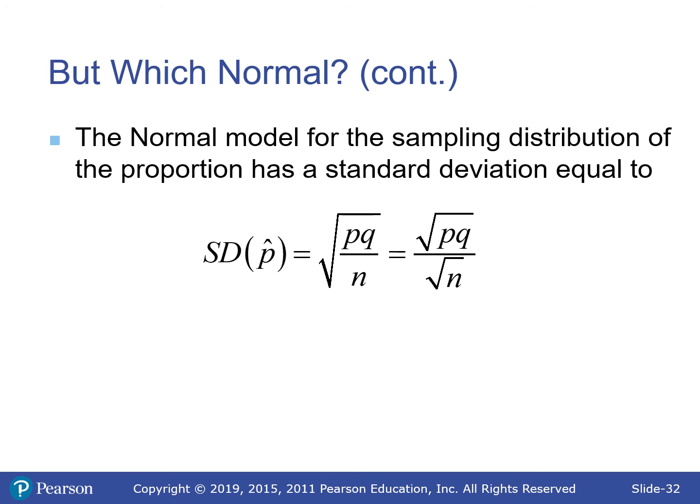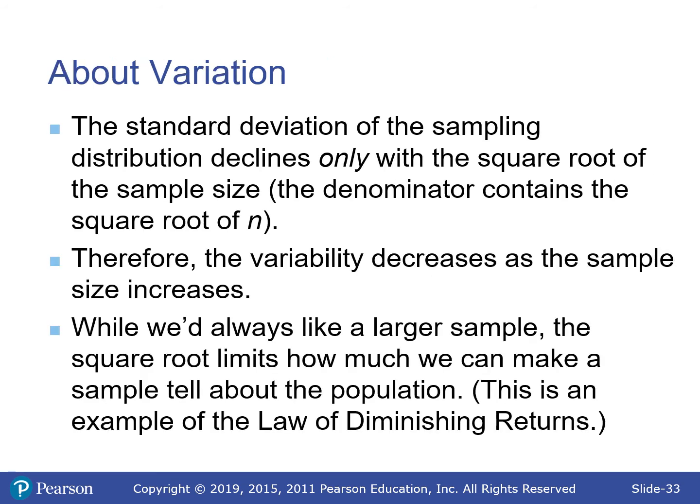The normal model for the sampling distribution of proportions uses standard deviation √(pq/n) — the square root can be applied across numerator and denominator. For means, it's σ/√n. The standard deviation of the sampling distribution declines only with the square root of sample size.